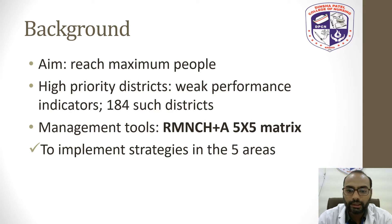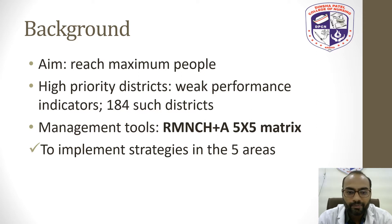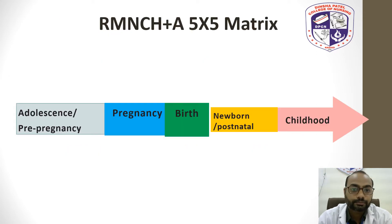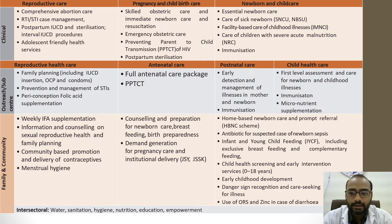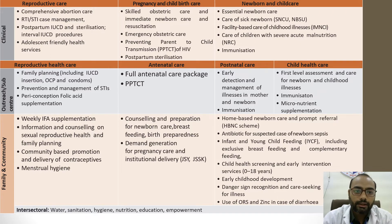This scheme uses tools like the RMNCH+A five-into-five matrix. The five-into-five matrix refers to five areas of focus to provide appropriate care across the whole life stage of females. This is the continuum of care under RMNCH+A: first is adolescent or pre-conception care, then care during pregnancy, care during birth, newborn or postnatal care, and childhood care.